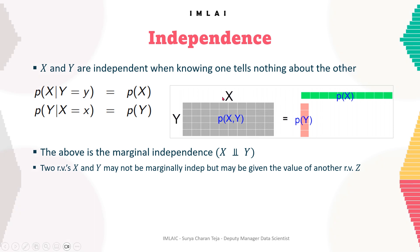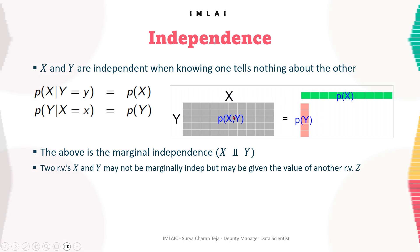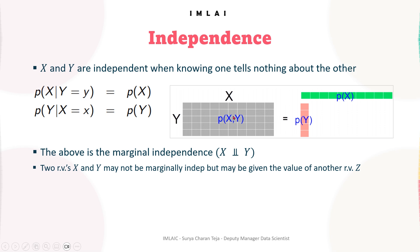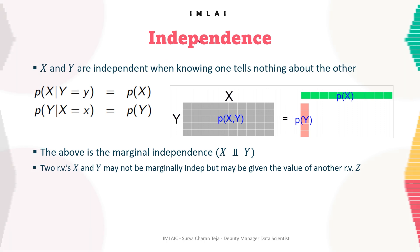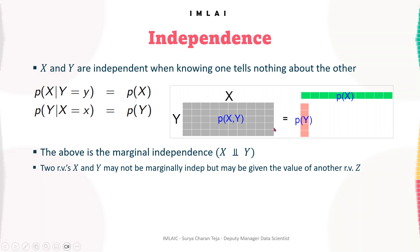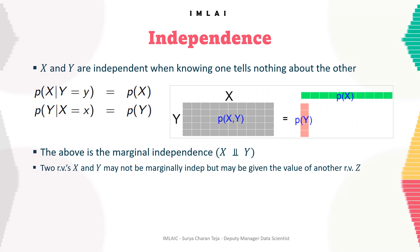Two random variables X and Y may not be marginally independent, but may be independent given the value of another variable Z. That's another concept of independence.